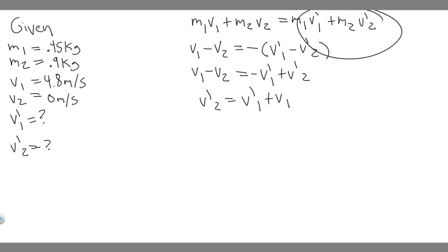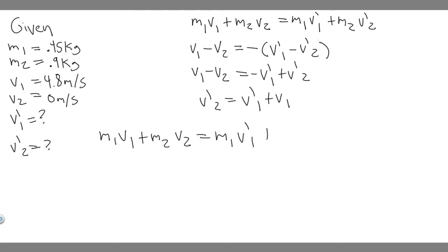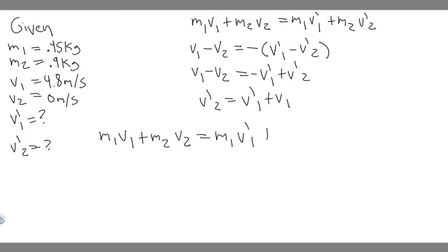Substituting into equation one: m₁v₁ + m₂v₂ = m₁v'₁ + m₂(v'₁ + v₁). Expanding the right side: m₁v'₁ + m₂v'₁ + m₂v₁. We just multiplied m₂ through the parentheses to get m₂ times v'₁ plus m₂ times v₁. This right here is our working equation.